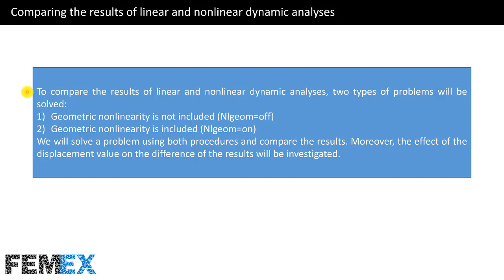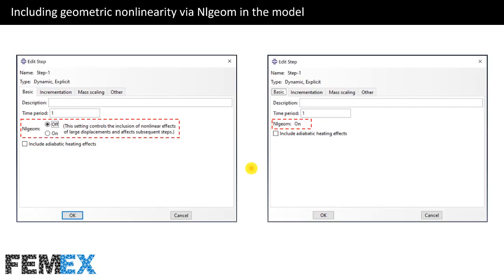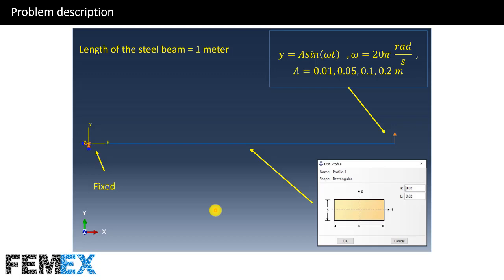To compare the results of linear and nonlinear dynamic analysis, two types of problems will be solved: when geometric nonlinearity is not included (NLGEOM set to off) and when geometric nonlinearity is included (NLGEOM set to on). We will solve a problem using both procedures and compare the results, and the effect of the displacement value on the difference of the results will also be investigated.